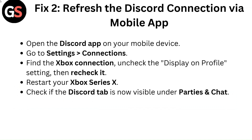Fix 2: Refresh the Discord connection via the mobile app. Open the Discord app on your mobile device. Go to Settings, then Connections, and find the Xbox connection. Uncheck the Display on Profile setting, then recheck it. Restart your Xbox Series X and check if the Discord tab is now visible under Parties and Chat.